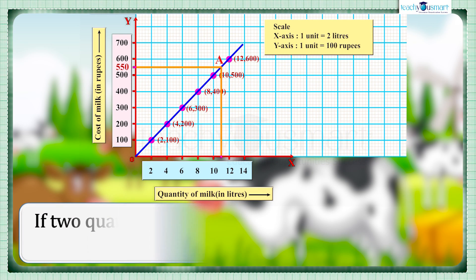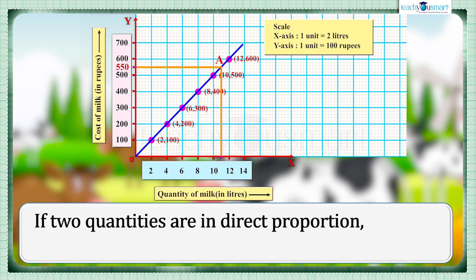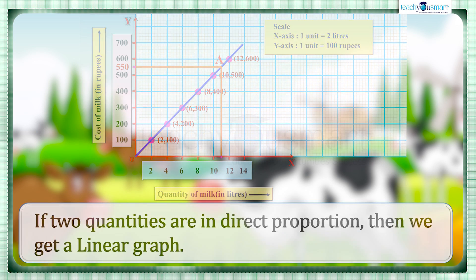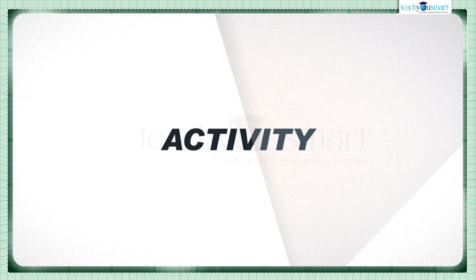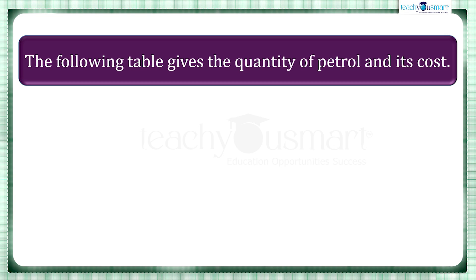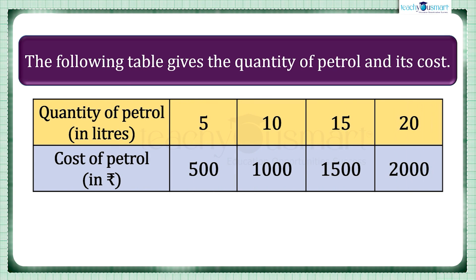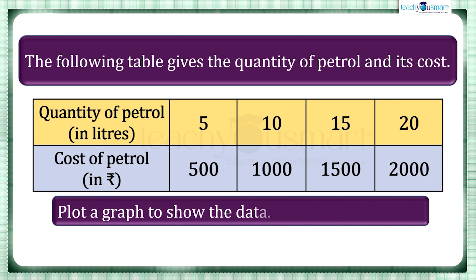Here we can see if two quantities are in direct proportion, that is, one quantity increases with another quantity linearly, then we get a linear graph. Before winding up, let's check how much you understood by doing an activity. The following table gives the quantity of petrol and its cost. Plot a graph to show the data.